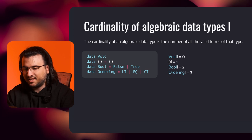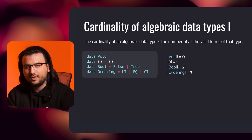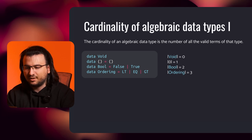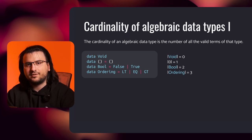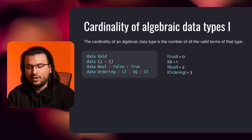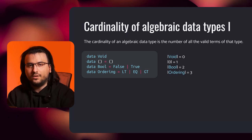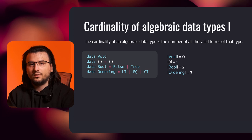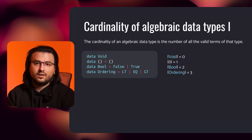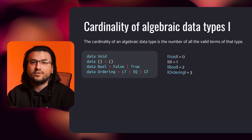Consider the following examples — the four classic data types: void, unit, bool, and ordering. Void, by definition, doesn't have any constructors; it's uninhabited. Unit has only one constructor, therefore its cardinality is one. Similarly, bool and ordering have cardinalities of two and three respectively.